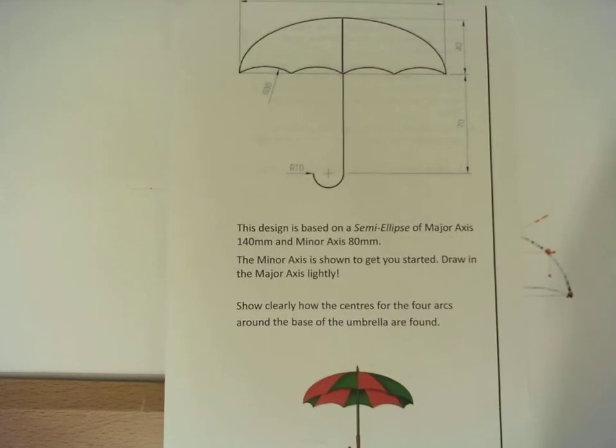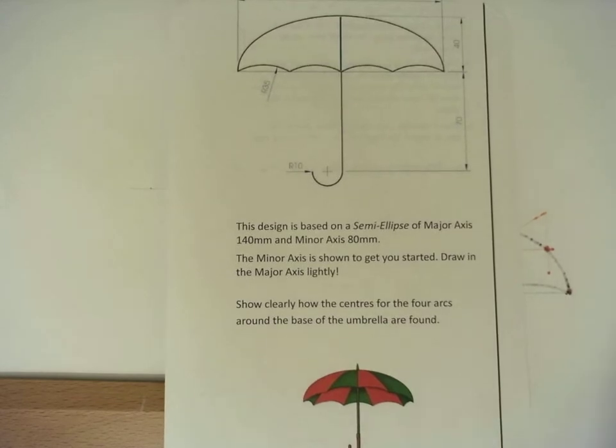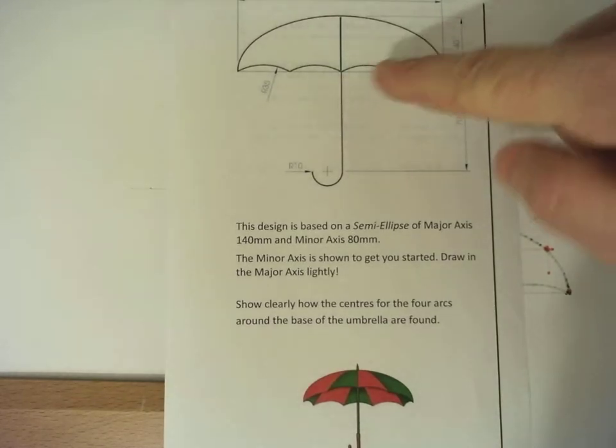We're going to have a go at drawing our umbrella. The top half is an ellipse with some arcs and we're going to draw a handle underneath.